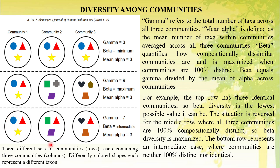In the case of the bottom row, gamma diversity is seven — there are some shared and some unique species across the three communities. Mean alpha is again three. Beta, calculated as gamma divided by mean alpha, is approximately 2.3, which is in between the minimum of one and the maximum of three — the communities are neither one hundred percent distinct nor identical.